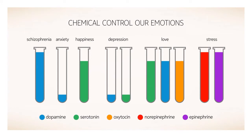Look at this figure. This shows the chemical control of our emotions by dopamine, serotonin, oxytocin, norepinephrine and epinephrine. In depression, the dopamine, serotonin, as well as epinephrine and norepinephrine levels get decreased. And hence, it affects mental activity and shows the mood disorder that is depression, causing hopelessness, overthinking, nervousness and all such symptoms.